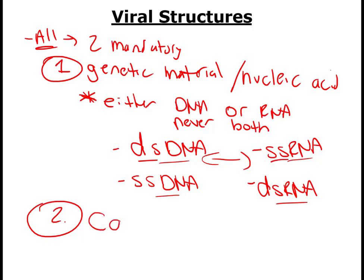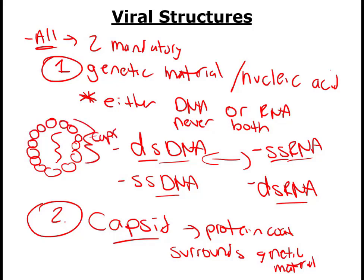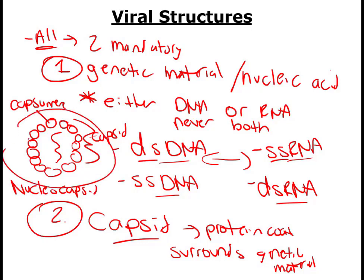The second mandatory component all viruses have is the capsid — a protein coat that surrounds the genetic material. The virus has its DNA or RNA, then these little proteins surrounding it form the capsid. Each individual protein unit is called a capsomere, and capsomeres come together to form the capsid. The nucleocapsid refers to the nucleic acid plus the capsid together, and is the bare minimum component a virus will have.